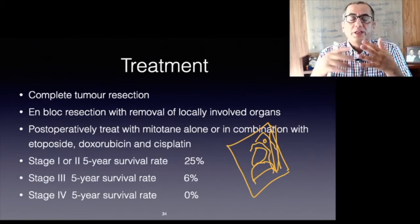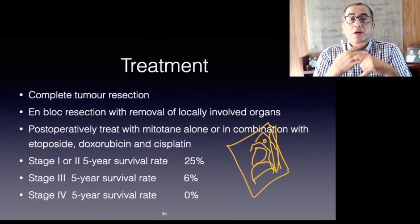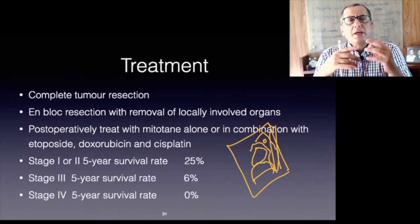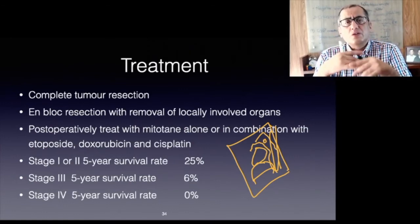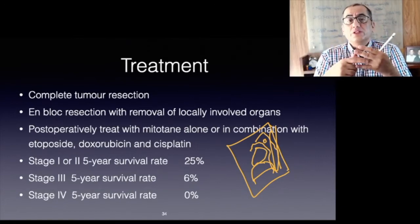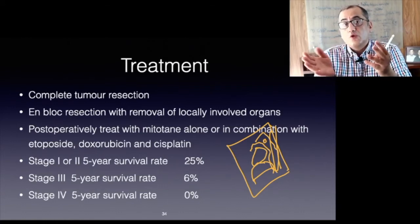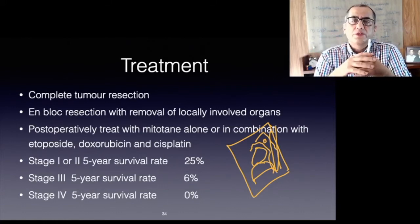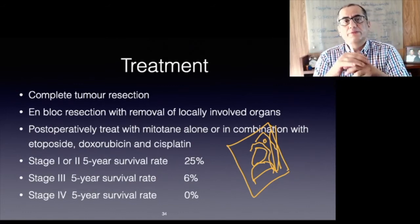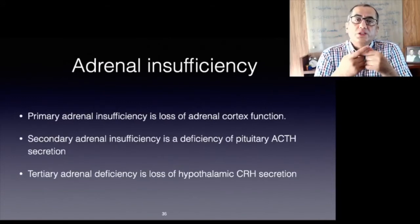Patients should be treated postoperatively with mitotane alone or in combination with etoposide, doxorubicin, and cisplatin; adjuvant therapy may reduce the rate of local recurrence. Restaging every three months is required as the risk of tumor relapse is high. Prognosis depends on stage and completeness of tumor removal. Patients with stage one or two disease have a five-year survival rate of 25 percent, whereas stage three and stage four patients have rates of six percent and zero percent respectively.